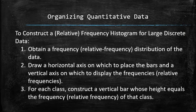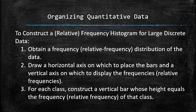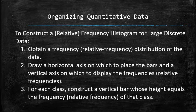Also, to construct a histogram or a relative histogram for large discrete data, we first obtain a frequency or relative frequency distribution table of the data. Then we draw a horizontal axis on which we place the bars and the vertical axis on which we display the frequencies or relative frequencies. And then for each class, we construct a vertical bar whose height equals the frequency or the relative frequency of that class. We at the end label the bars with the classes, the horizontal axis with the name of the variable, and the vertical axis with the frequency or relative frequency.